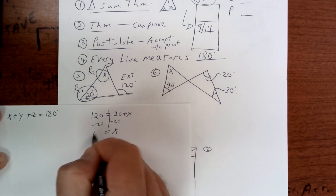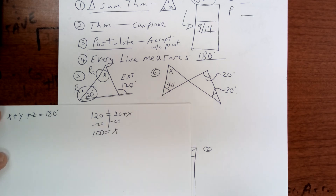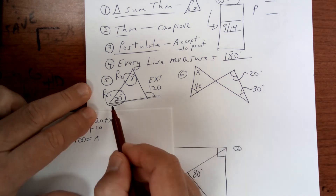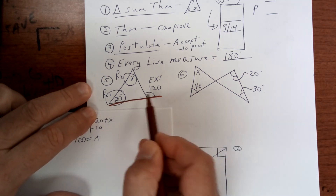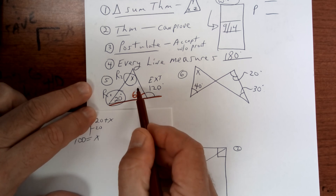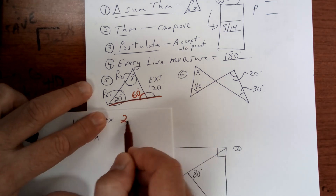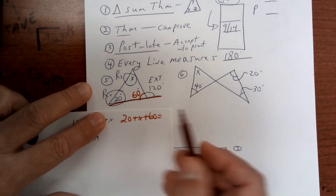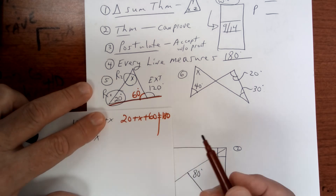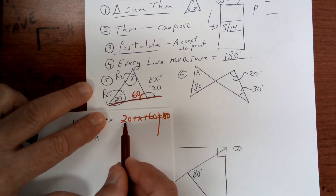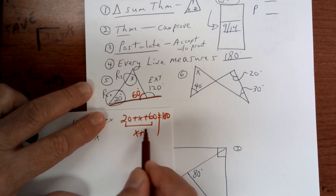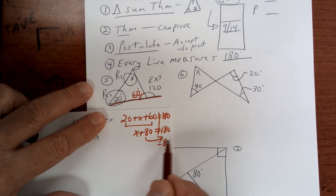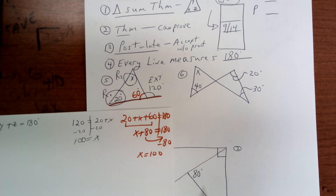The way I taught you yesterday was that every line is worth 180 degrees. So first I said supplementary — this would be 60 degrees. Then you say 20 plus x plus 60 is equal to 180 degrees, which is a triangle. This is 80, so you'd have x plus 80 equals 180, subtract 80, and get x equals 100. Either way you do it, there it is.